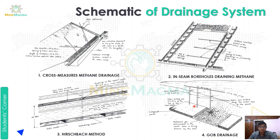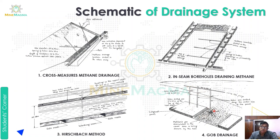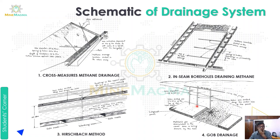The fourth method is goaf drainage. In the underground long wall panel, the caved area is where pillars have been removed and the roof has fallen. Gas accumulates in this caved area. Boreholes are drilled along the center line of the panel from the surface, positioned a few meters — up to around 10 meters — above the top of the coal seam. The gas accumulated in the caved area is drawn out through these boreholes.